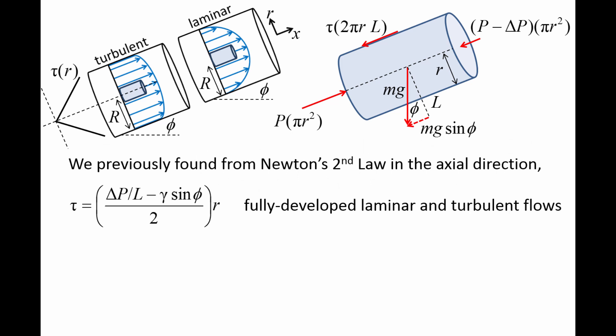In a previous video, we applied Newton's second law in the axial direction to a fluid cylinder in a fully developed flow. We found that the shear stress tau is proportional to the radius for both laminar and turbulent flows. For laminar flows, we were able to relate the laminar shear stress to the velocity gradient in the radial direction to derive an exact expression for the velocity profile, which is the shape of a parabola.